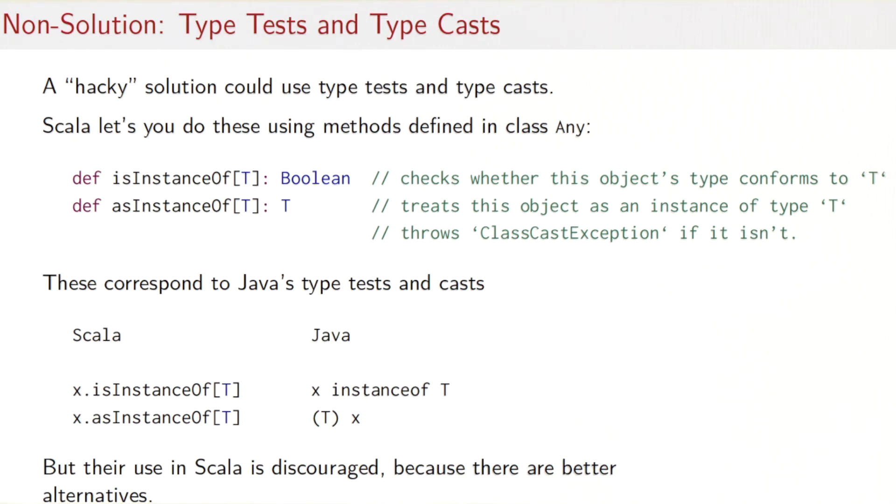The Scala form of these type tests and type casts is as methods on the type class Any, and the methods would take the type that they want to test or cast against as a type parameter. If you compare the Scala solution and the Java solution, then you see that the Scala solution is quite a bit longer, and you could argue less legible than the Java solution. And that's completely intentional because actually it turns out that type tests and type casts are very low level and unsafe, and that in fact Scala has much better solutions. So the use of type tests and type casts exists in Scala because it's sometimes useful for interoperability with Java, but the use is discouraged.